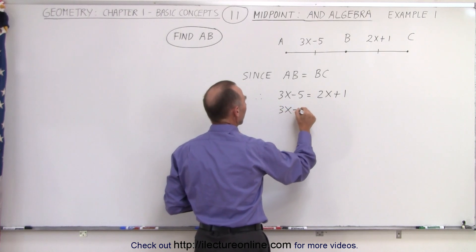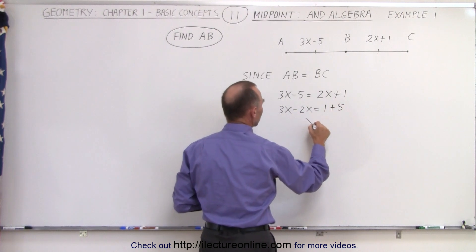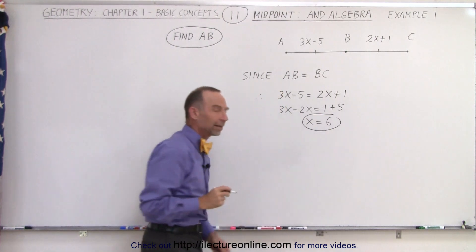3x minus 2x, that means x is equal to 6. And there we are, the value for x.